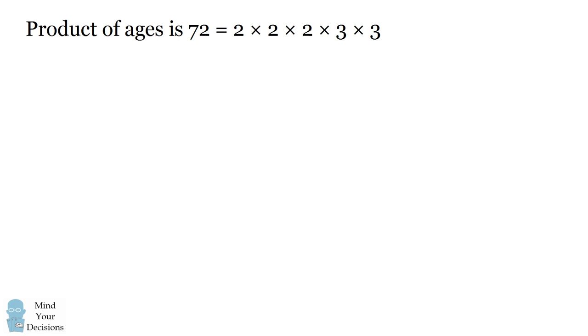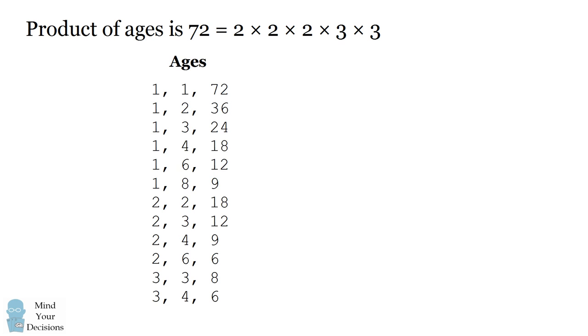The mathematician says the three children have a product of their ages of 72. We can factor 72 into the primes 2×2×2×3×3. There are only a few prime factors, and when we consider the ways you could get three ages to multiply to 72, there are actually only 12 different possibilities. These are written in increasing order: 1,1,72; 1,2,36; 1,3,24; 1,4,18; 1,6,12; 1,8,9; 2,2,18; 2,3,12; 2,4,9; 2,6,6; 3,3,8; or 3,4,6.